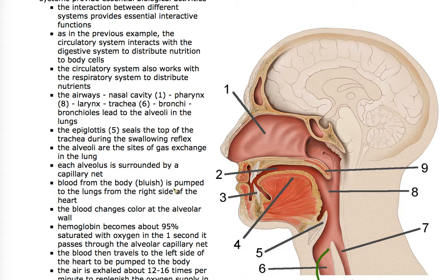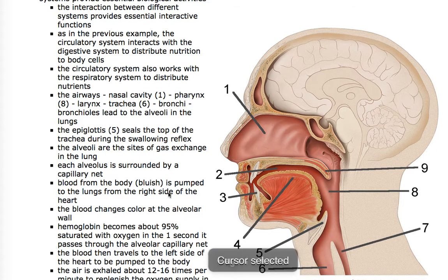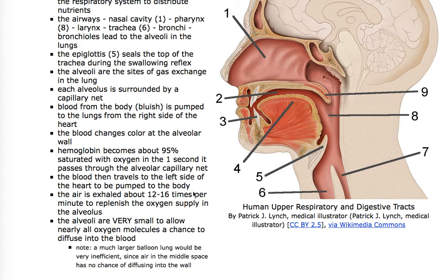The alveoli are tiny air sacs down in the lungs that allow for gas exchange. Each alveolus is surrounded by a tiny capillary net. Blood from the body is pumped into the capillary beds around those alveoli and it changes color. Hemoglobin in the lung capillaries becomes about 95% saturated with oxygen in the one second that it passes through the capillary net of the alveoli. The blood then goes back to the left side of the heart and is pumped to the rest of the body. We breathe in and out about 12 to 16 times a minute, oxygenating our blood sufficiently to survive.